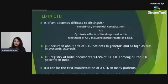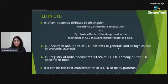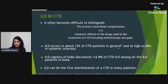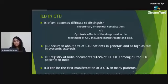It is often difficult in pre-established CTD to distinguish whether ILD is due to primary interstitial complications or secondary to immunosuppressants — especially methotrexate and gold substances. ILD occurs in about 15% of CTD overall and as high as 60% in systemic sclerosis. The ILD registry of India documents 13.9% of CTD-ILD among all ILD patients, which surpasses IPF numbers in India.